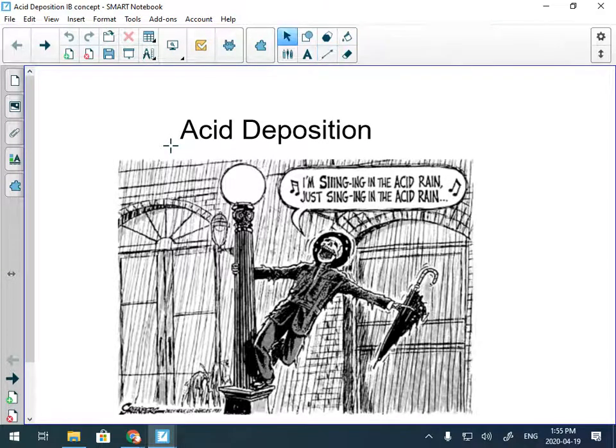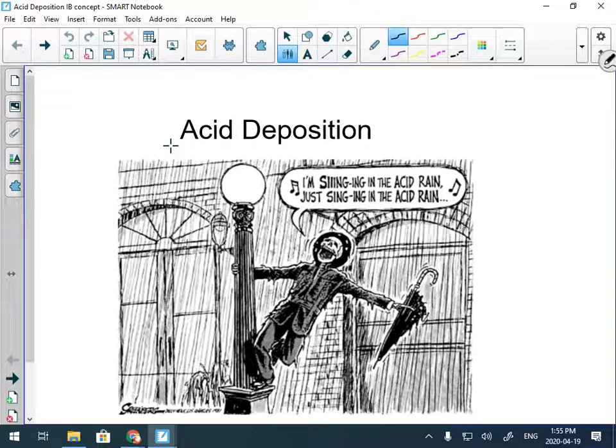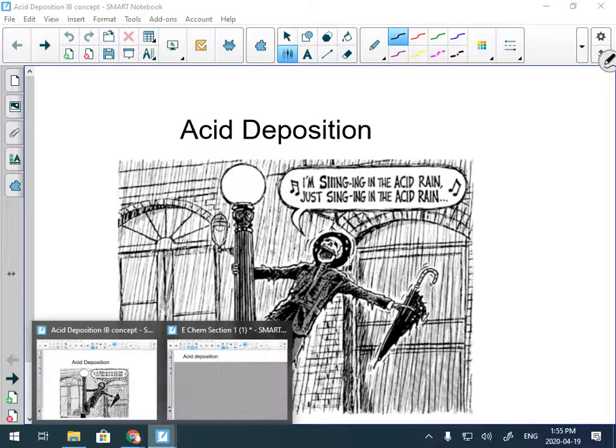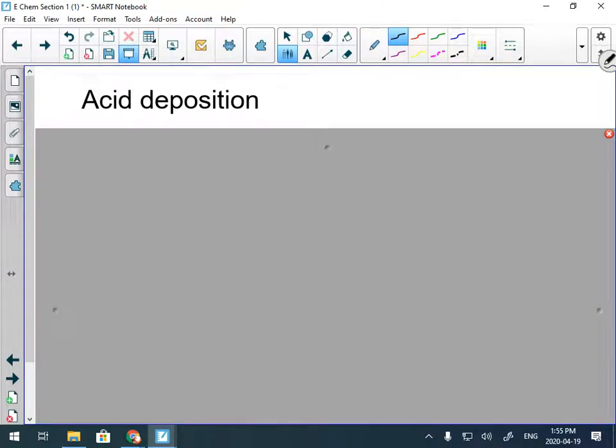All right, it's time to talk to you guys about acid rain today. Acid rain is an IV concept. We were talking last day about how nitrogens and sulfurs become oxides.